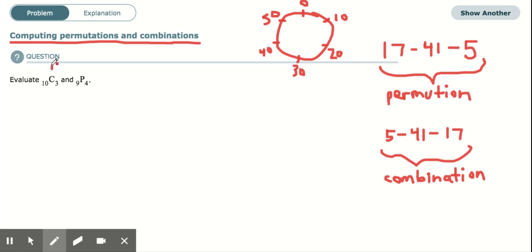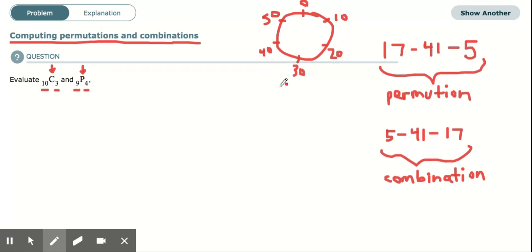That's what the C and the P in these problems stand for. The C means you're doing a combination. For example, 10 choose 3 means there are a total of 10 options and you're choosing 3 of them — how many different combinations can we make? And 9 choose 4 asks how many different ways you could place 4 out of 9, where order does matter.